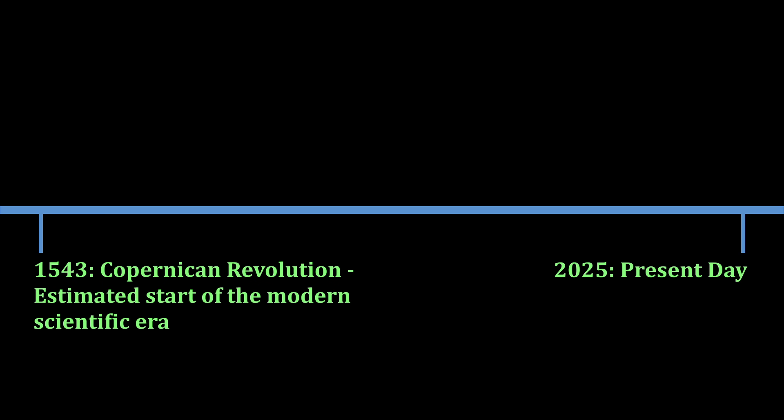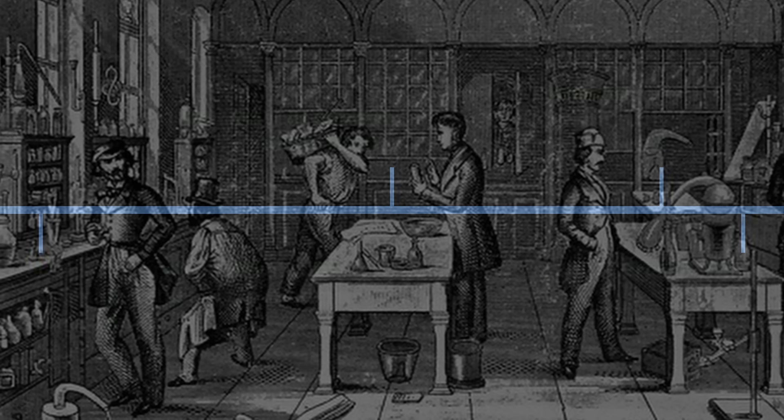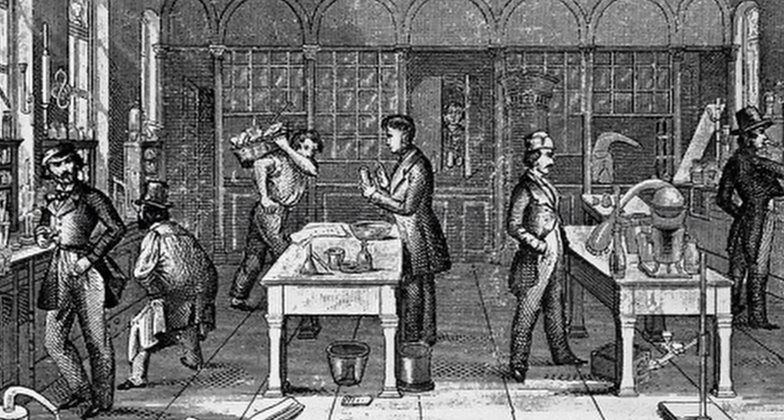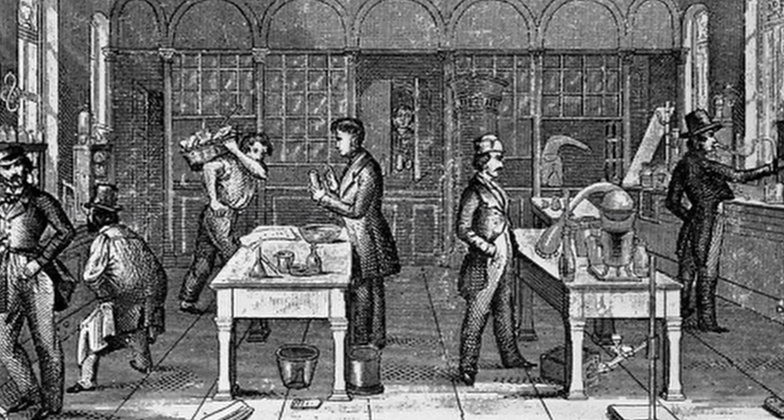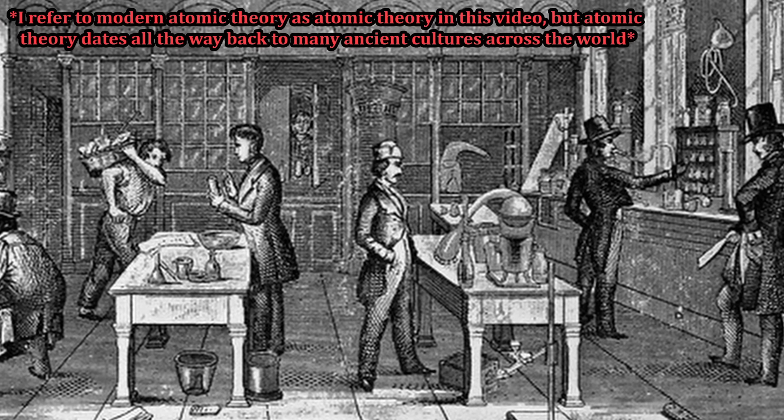The development of our understanding of atomic weight spans a big chunk of the modern scientific timeline, an astounding 158 years, with the latest major development happening in 1961. To fully understand this enormous timeline, we must start at the beginning, at the turn of the 19th century, when atomic theory itself was just being born.